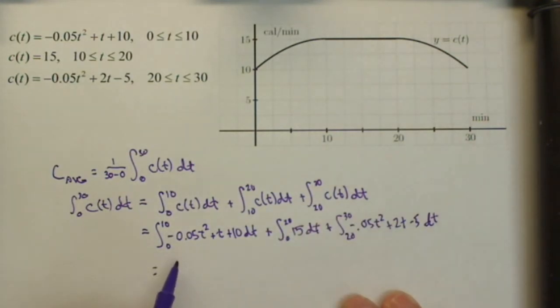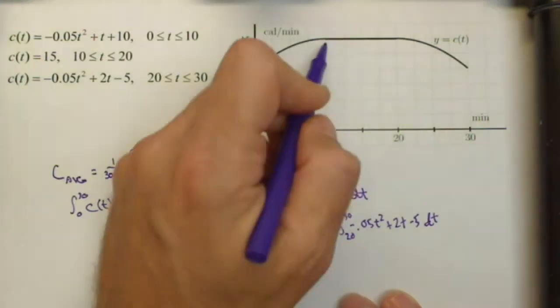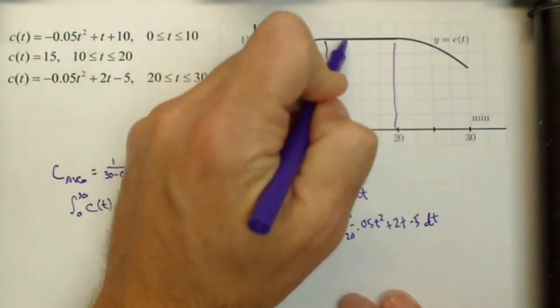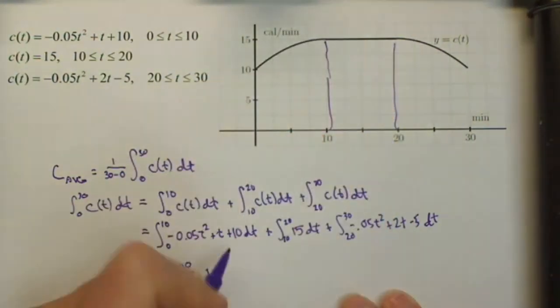Again, we calculated this in the first video. It came out to be 400 thirds. This one, that should not be a zero, excuse me, that should be from 10 to 20. This one, notice if we look, it's just a rectangle with a height of 15 and a base of 10, so 150. So that's just a multiplication for our calculation.